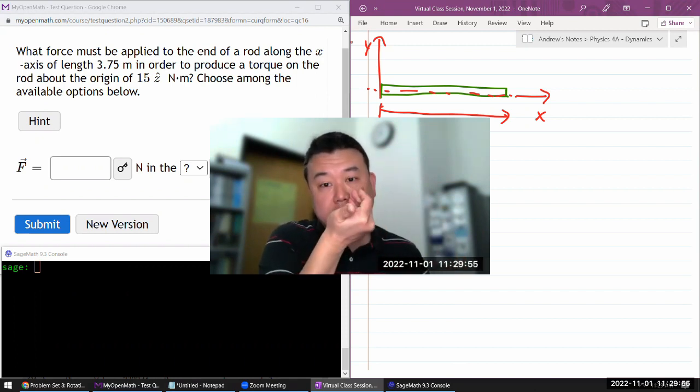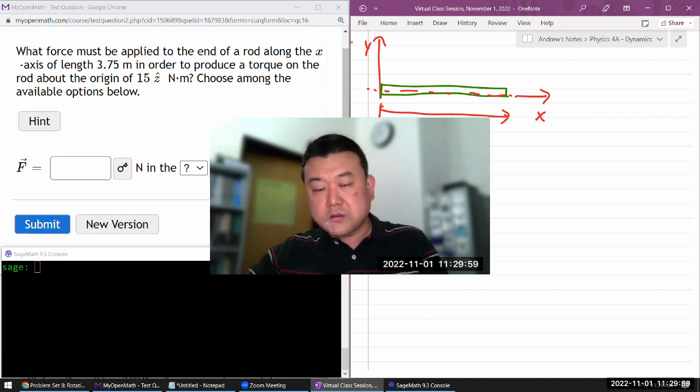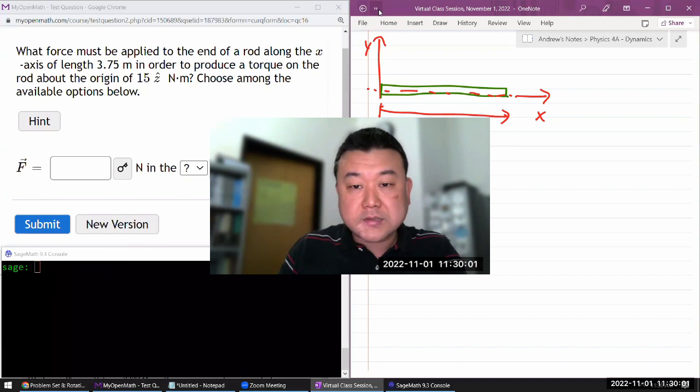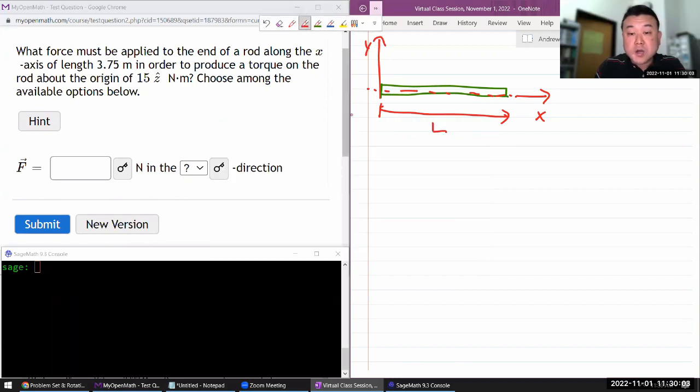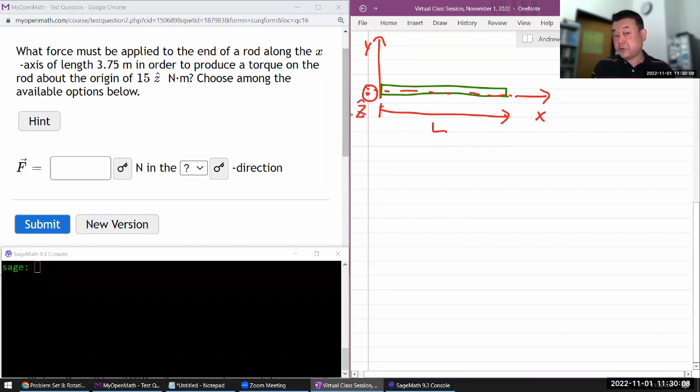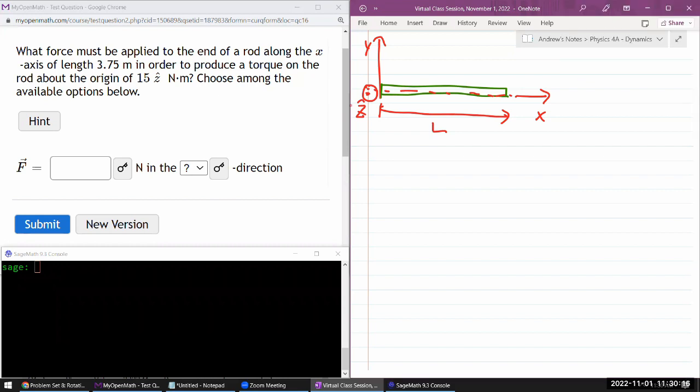And when I do that, my thumb is coming out of the screen. So the three-dimensional coordinate axis is defined so that x cross y is equal to z. So the z-axis will be coming out of the board. So what they are saying is they want the torque about the origin to come out of the screen like this. And they're asking, what should be the force?